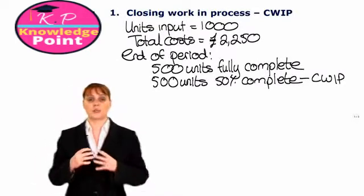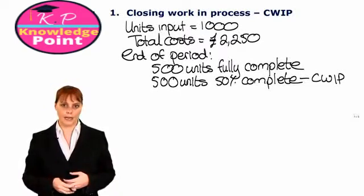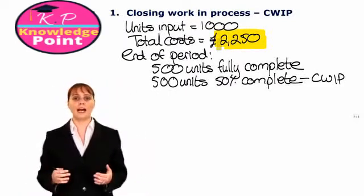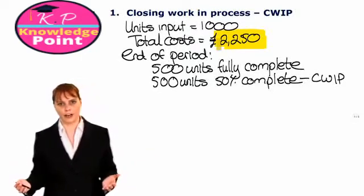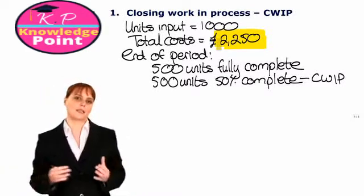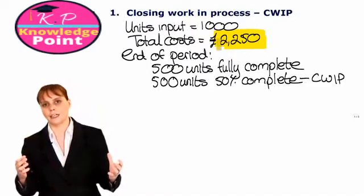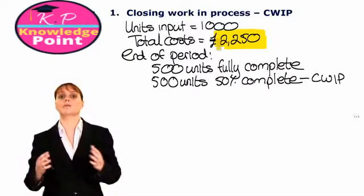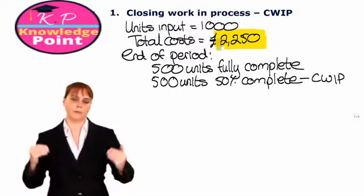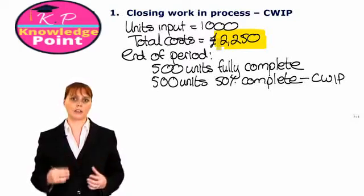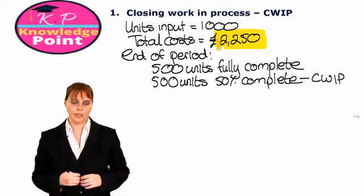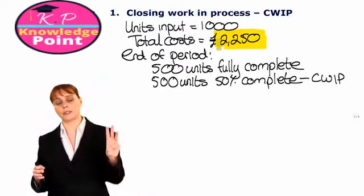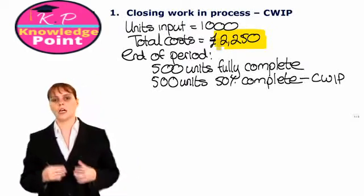The question we have is how do we value each of these components — how much we have spent on the 500 fully completed units, and how much we have spent on our closing work in progress? In previous exercises, we just spread the costs evenly across our units of output. So if we were to divide our total costs of 2250 evenly, then we would value each component at 1125 pounds each. But does it make sense to put the same value on 500 fully completed units as 500 partially completed units? It seems logical that we have spent more money fully completing 500 units than doing part of the work on our closing work in progress. In every question involving opening and closing work in progress, we are going to follow three steps to divide these costs fairly.